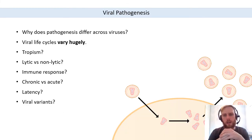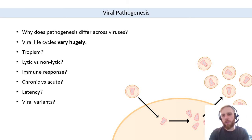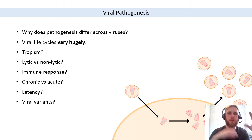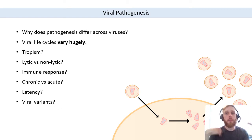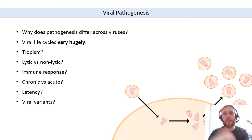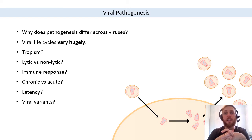We can fairly easily explain why a virus causes its specific type of disease by breaking down the replication cycle. The key questions to ask are: What is the tropism — what type of cell is infected? Is it a lytic or non-lytic infection? What immune response is induced? Is it chronic or acute? Is there latency? And are there potential differences across viral variants? Understanding all this gives a clear picture of how a virus specifically causes disease.